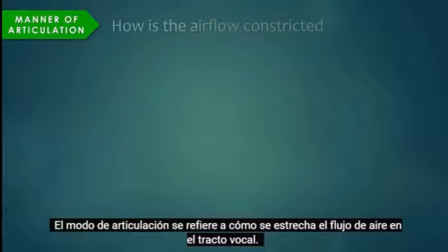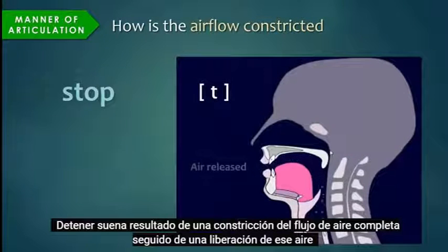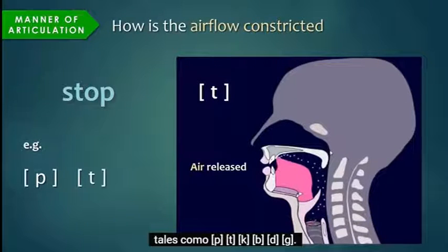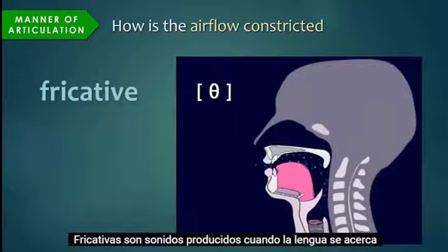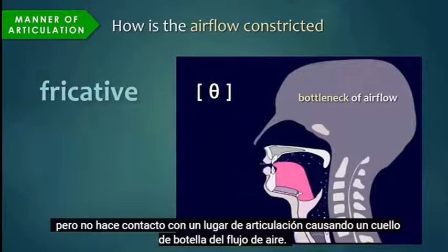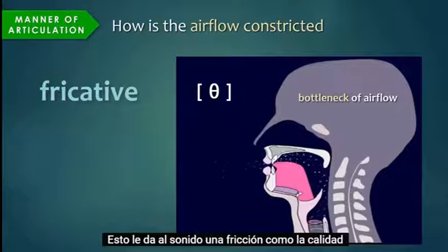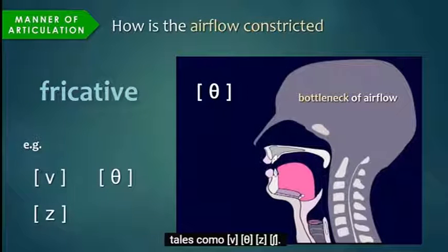Manner of articulation refers to how the airflow is constricted in the vocal tract. Stop sounds result from a complete constriction of airflow followed by a release of that air, such as p, t, k, b, d, g. Fricatives are sounds produced when the tongue approaches but does not make contact with a place of articulation, causing a bottleneck of the airflow, giving the sound a friction-like quality, such as v, th, z, sh.